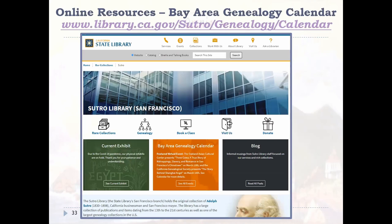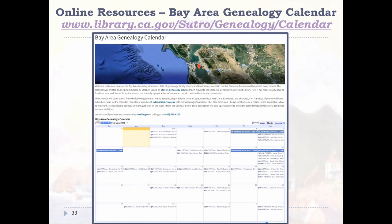Sutro Library is not just a physical hub for the genealogy community but also a virtual hub. We've hosted the Bay Area Genealogy Calendar for almost five years — a place where the community can see local and family history events in their area. You can find it on our homepage in a large orange box, with a featured event every month. You can click on each event for a detailed description and see whether it's virtual or in person. Even if you aren't in the Bay Area, there may be virtual talks you can attend. You can also view it in list form by clicking the agenda tab.